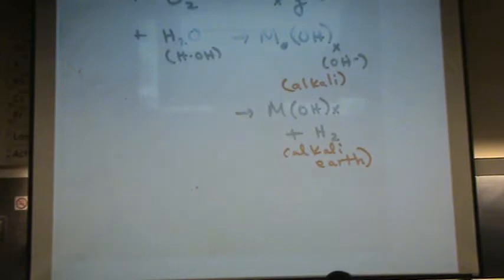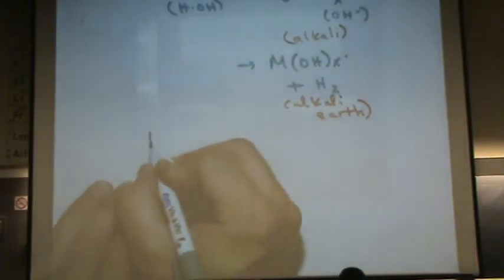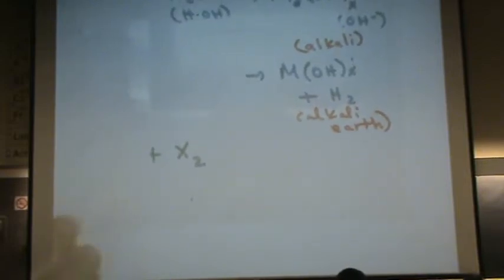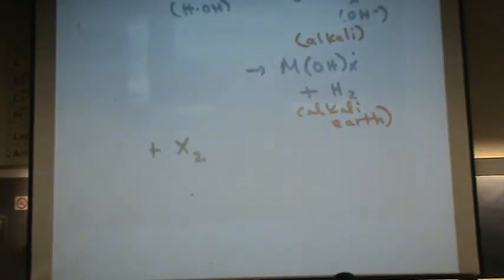And I'll show you a way so that you don't have to memorize that. Okay, you can have plus X2. In a periodic table, what does X stand for? Usually halogens. Chlorine, bromine, iodine, etc. So plus a halogen.